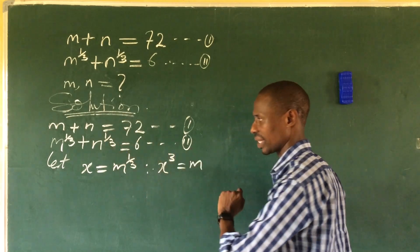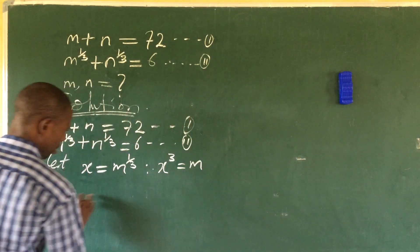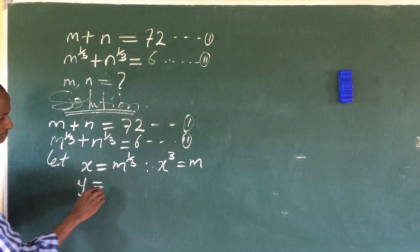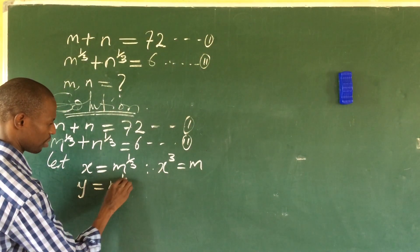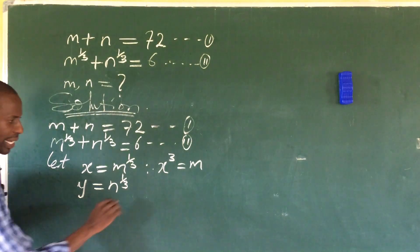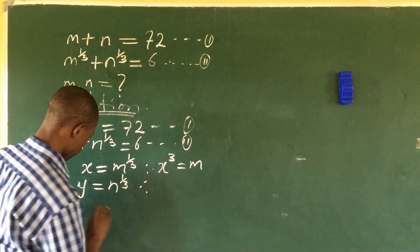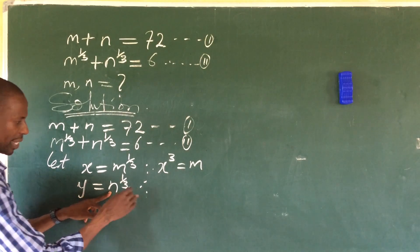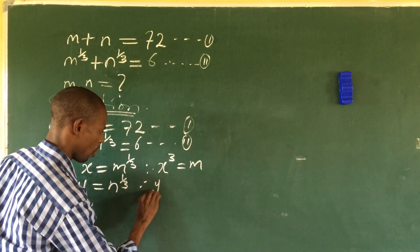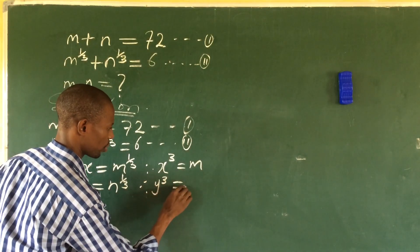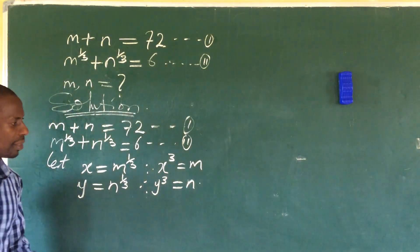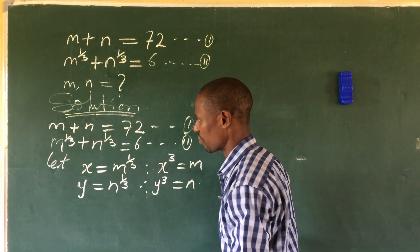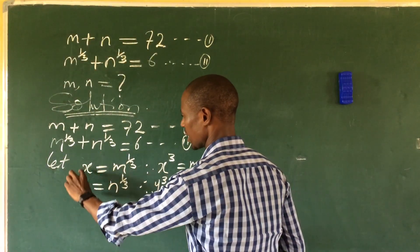At the same time, we bring in another variable y. Let y = n^(1/3). Similarly, making n the subject gives us y³ = n.